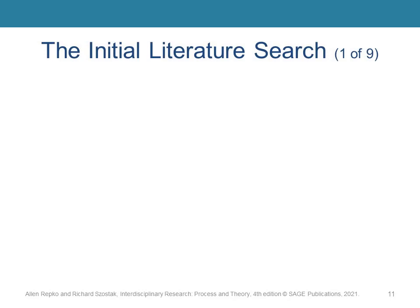The first phase of step four is to complete the initial literature search. This phase usually begins in step one, when we select the problem or research question, and then decide if it is appropriate for interdisciplinary study.